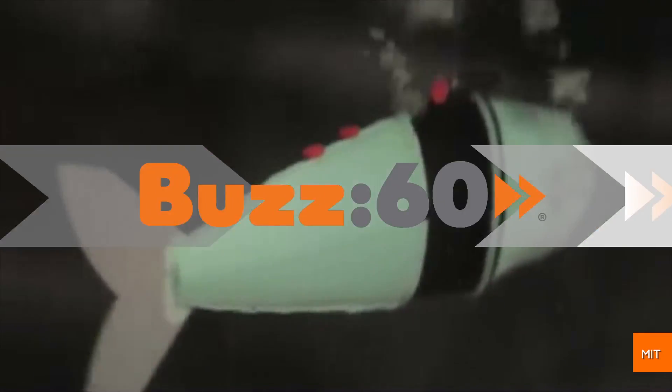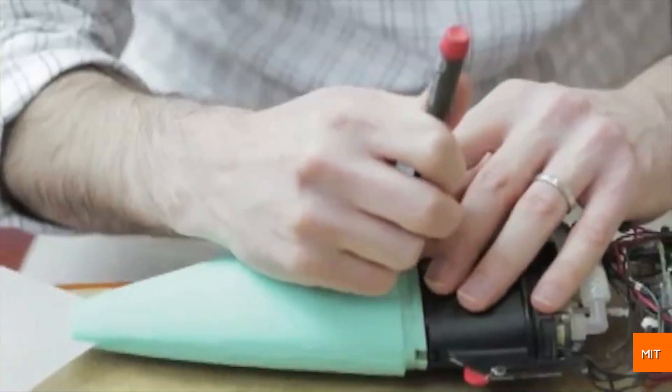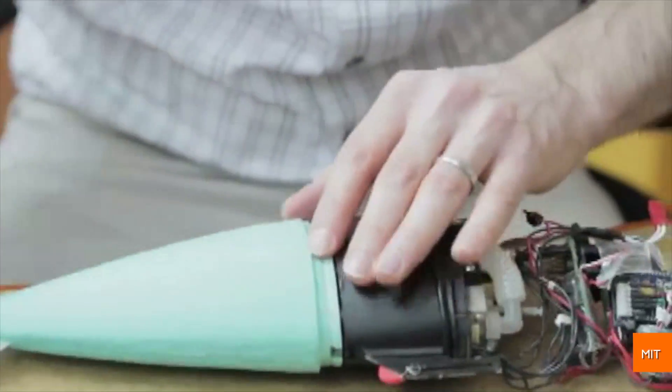There's something fishy about this machine. It's being called the first autonomous soft robot capable of rapid movement. I'm Jen Markham on Buzz 60.